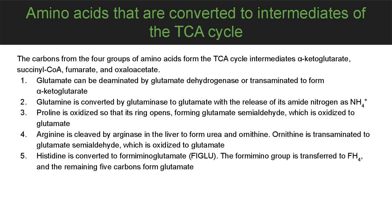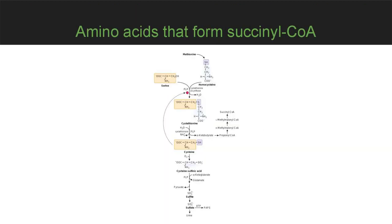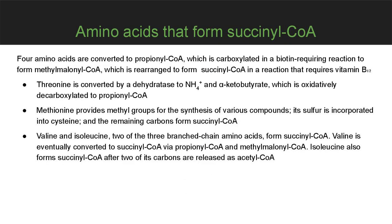Histidine is converted to formiminoglutamate. Cysteine is synthesized from the carbons and nitrogen of serine and the sulfur of homocysteine. During degradation of cysteine, the sulfur is converted to sulfate and either excreted in the urine or converted to the universal sulfate donor 3'-phosphoadenosine 5'-phosphosulfate (PAPS), and the carbons are converted to pyruvate. Branched-chain and other amino acids are converted to propionyl-CoA, which is carboxylated in a biotin-requiring reaction to form methylmalonyl-CoA.